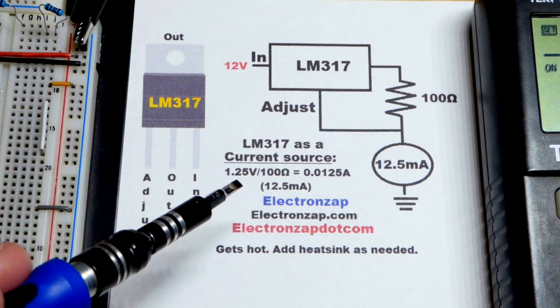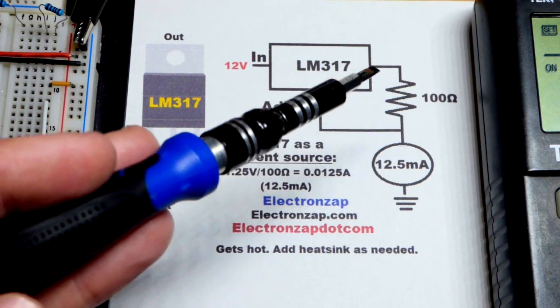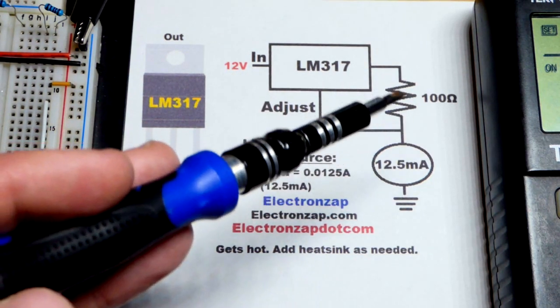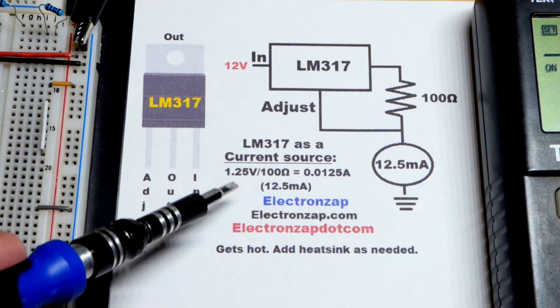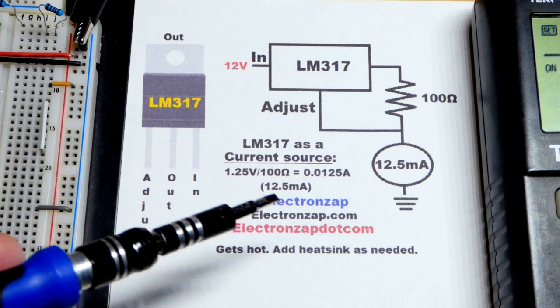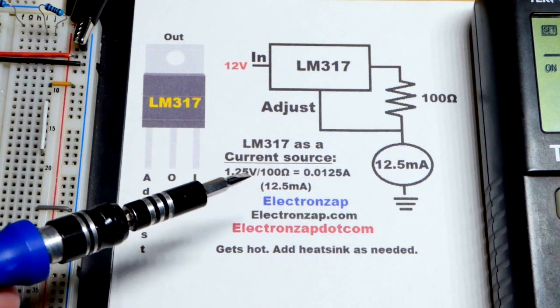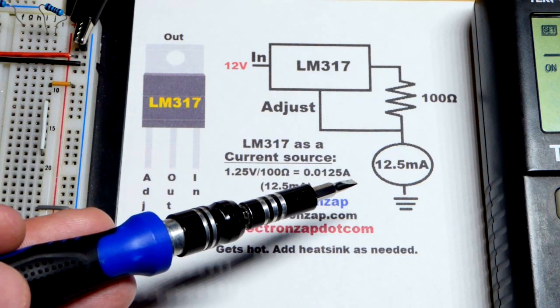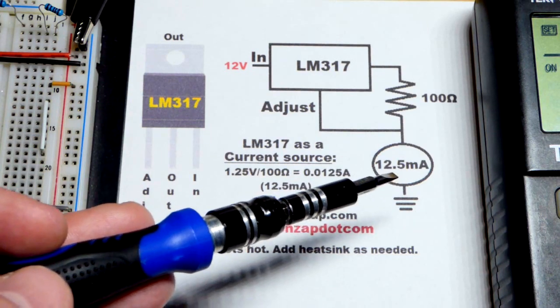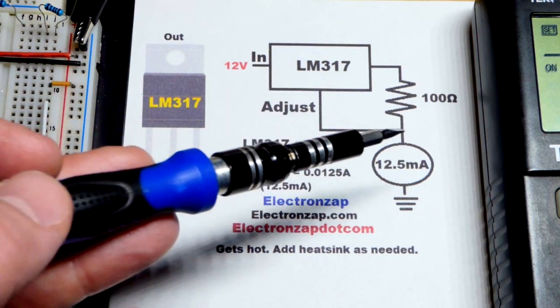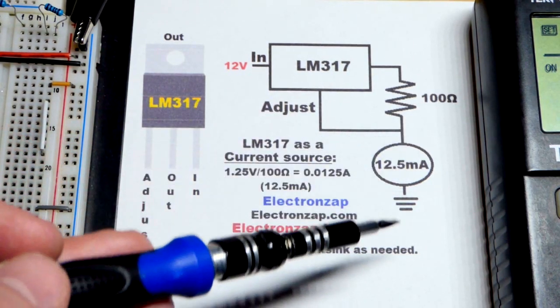And what it does, it actually sets a voltage across the resistor from the output to the adjust. As you can see right there, it's going to set 1.25 volts. And if it's a 100 ohm resistor, we just do Ohm's law. Take the voltage divided by the resistance, you get the current in amps. And that's the same as 12.5 milliamps. So that will be the current from the adjust pin there to ground.